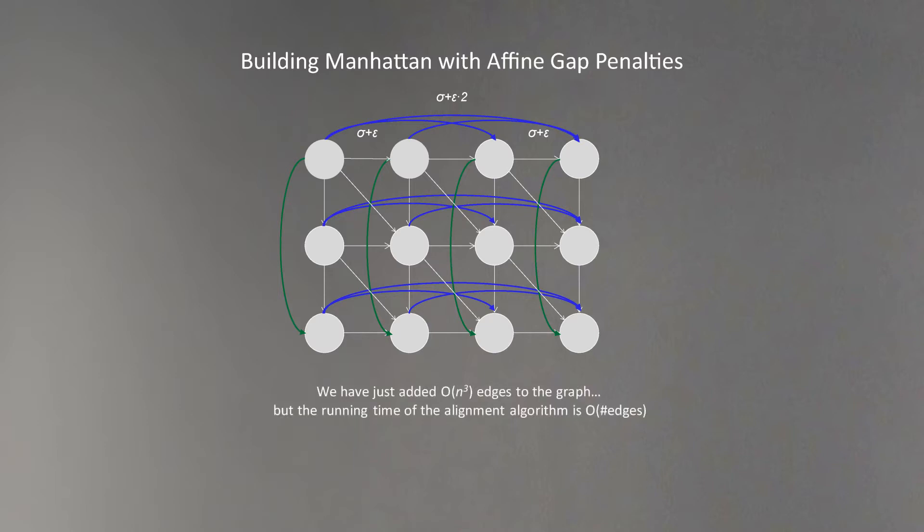How many edges have we added to our graph? Actually, we added edges proportionally to n cubed, where n is the length of sequences which we are trying to compare. Since sequence alignment algorithm's runtime is proportional to the number of edges, our algorithm will be quite slow - it will run proportionate to n cubed.